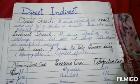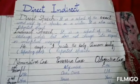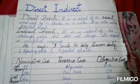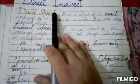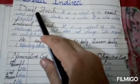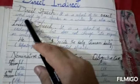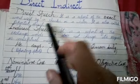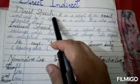Assalamu Alaikum students and my dear fellows. Today our discussion topic is about direct and indirect speech. First of all, you should know the difference between direct and indirect speech. Direct speech is a report of the exact words used by a speaker or a writer. It is also called reported speech.